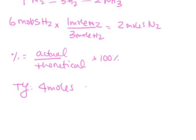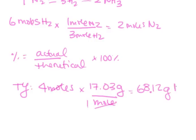Let's convert that to grams by multiplying by the molecular weight of ammonia, 17.03 grams per mole. Moles cancel. That gives us 68.12 grams of ammonia.